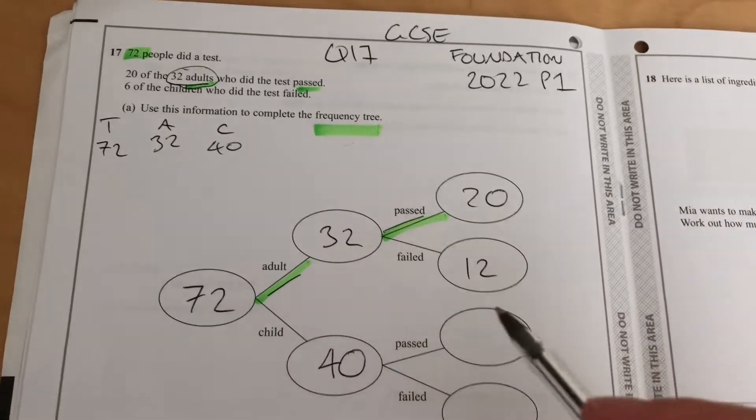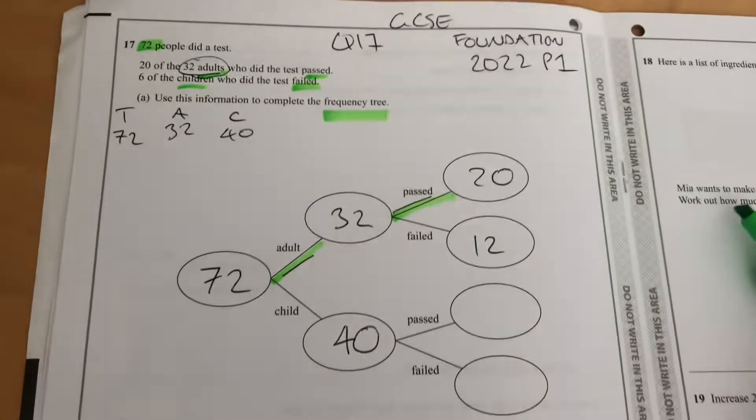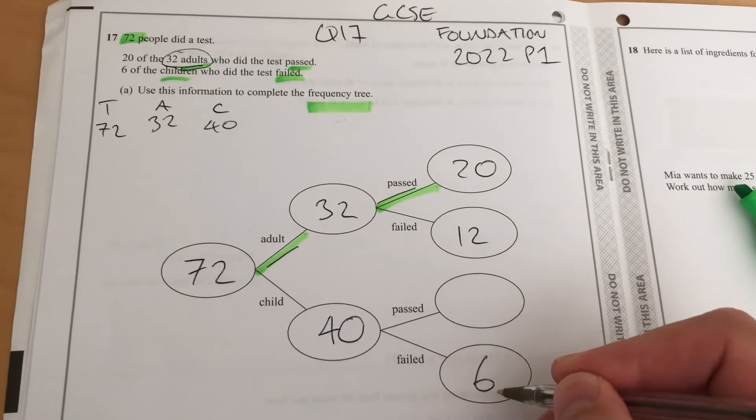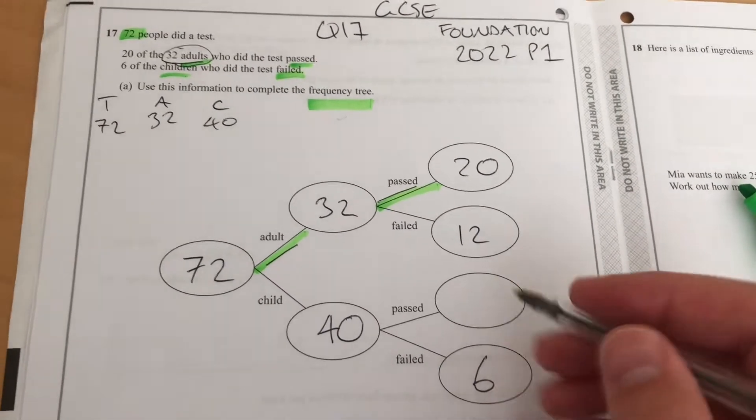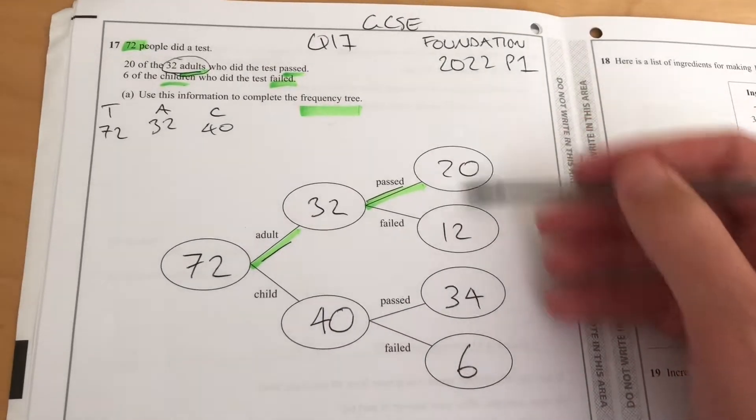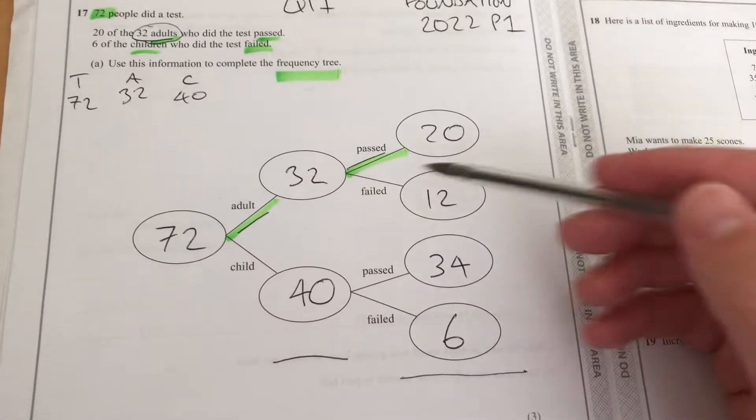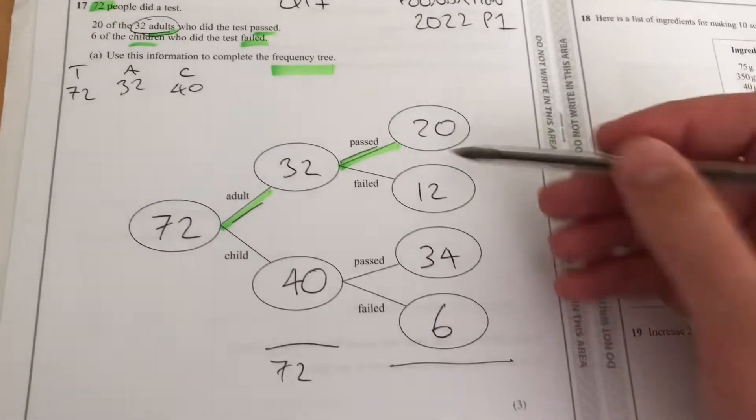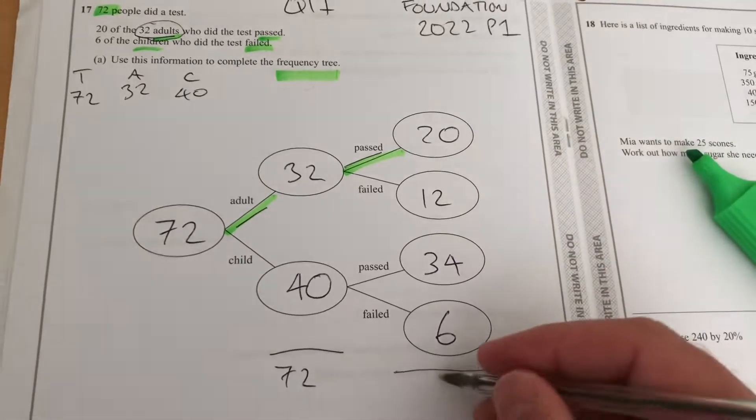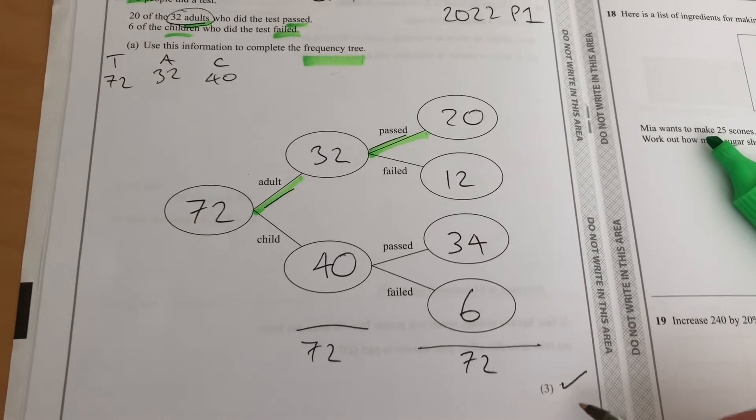Now we go down to the children. Six of the children failed, and we assume that the rest had to have passed—that'll be 34. Now that sum there and that sum there should also add to 72. That's 72, that looks fine. 32, 62, 66, 72—all looks fine, should get those three marks.